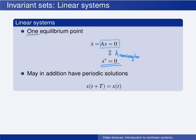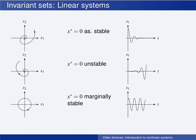In addition to this one equilibrium point, linear systems may have periodic solutions. A periodic solution is one that repeats itself after some time period T, and this solution is an invariant set. To illustrate this, let us consider a two-dimensional system. The states can be represented in a two-dimensional coordinate system, with the first state x1 along one axis and the second state x2 along the other. We will consider three different linear systems, all of which have an equilibrium point at the origin.